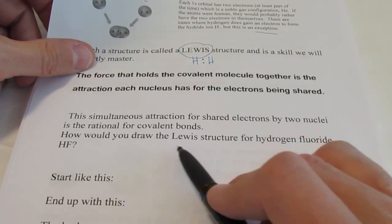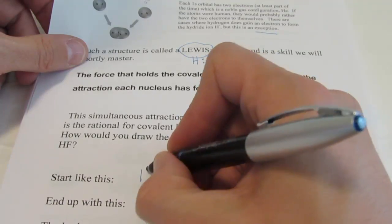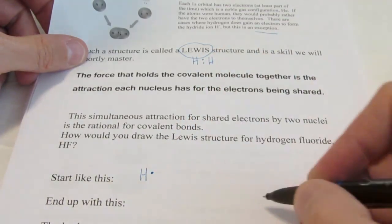The structure we just drew, where we drew two hydrogens sharing a pair of electrons like that, is called the Lewis structure. It's named after Gilbert N. Lewis. And we will learn how to draw Lewis structures in this chapter. We'll actually be quite good at it.